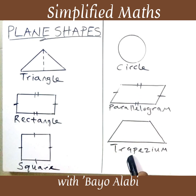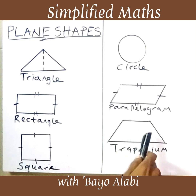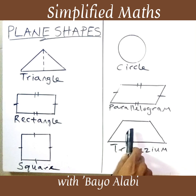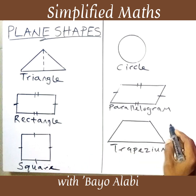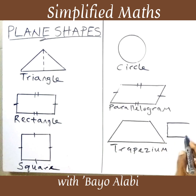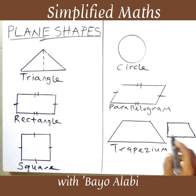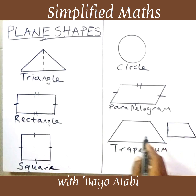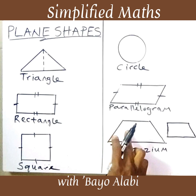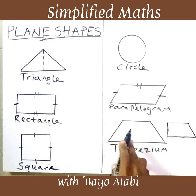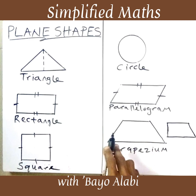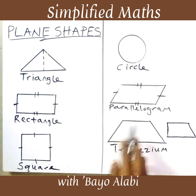Then the next one is a trapezium. A trapezium looks like the shape of a car or a vehicle. We have different drawings of a trapezium — it can look like this, or like this. A trapezium has four sides, and none of the sides may be equal to the other.